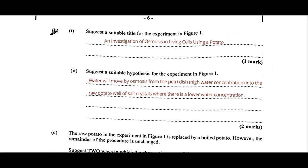Part b asks you to suggest a suitable title for the experiment in Figure 1. The title I gave is: 'An investigation of osmosis in living cells using a potato.' Anything similar to that can work as a title, just to show what the experiment is about — we're investigating osmosis in living cells, which is from the potato.